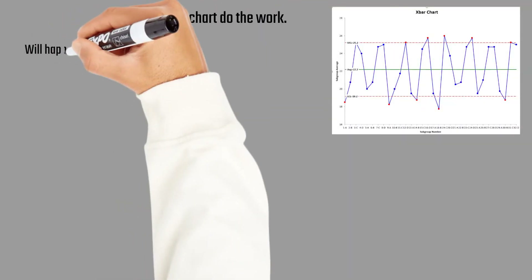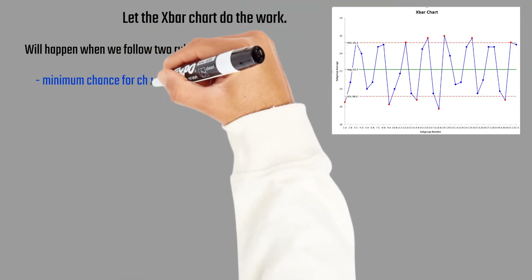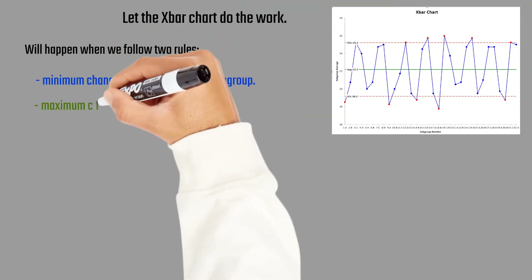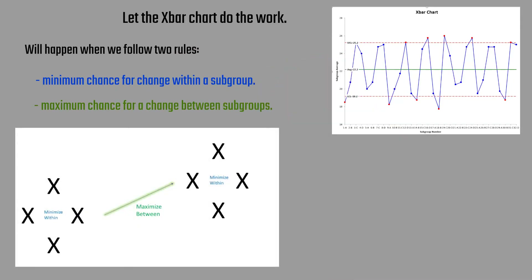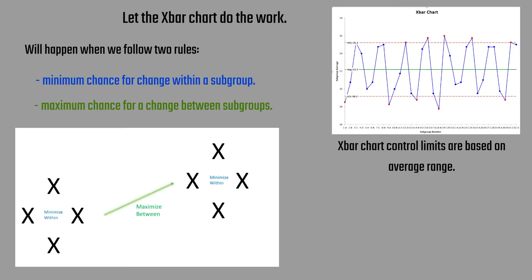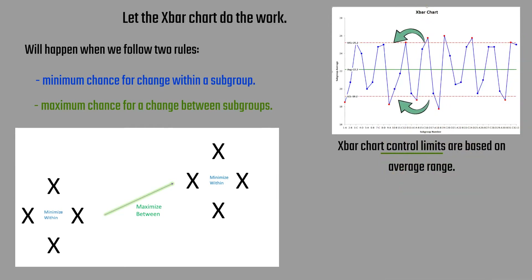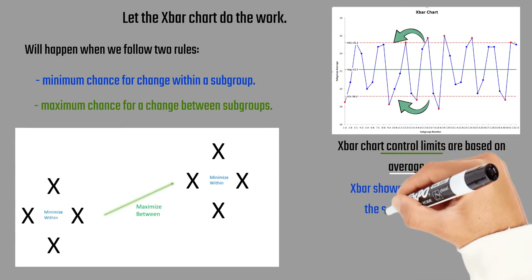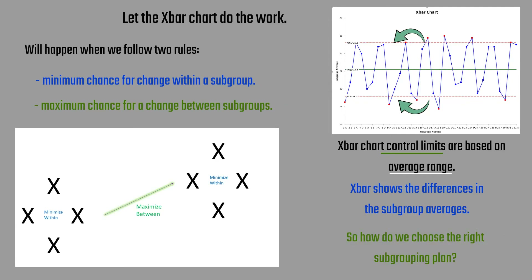The idea behind rational subgrouping is to let the X-bar chart do the work. That will happen when we follow two rules: minimize the chance for variation within a subgroup, and maximize the chance for variation between subgroups. X-bar control charts are based on the average range. If you minimize the average range, you make sure the X-bar chart does the work, because it shows the differences in subgroup averages.